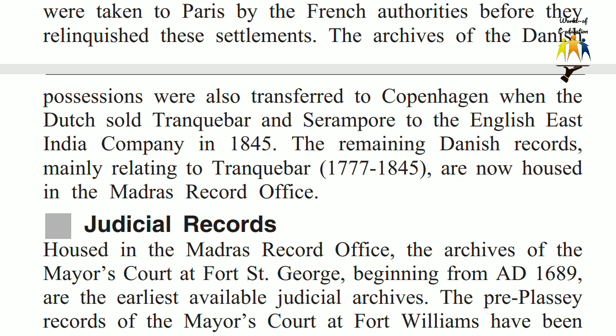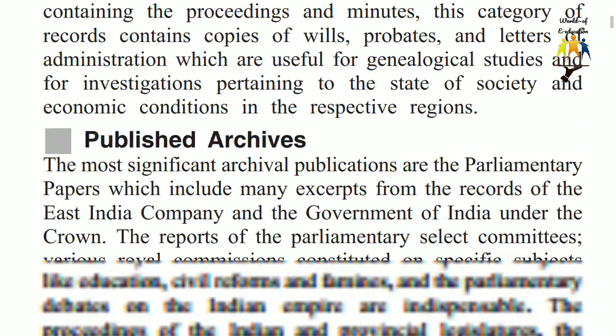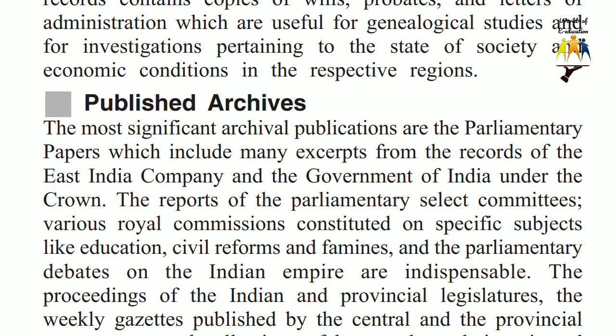The pre-Plassey records of the Mayor's Court at Fort Williams have been lost, but those for the years 1757–73 are kept in the Record Room of the Calcutta High Court, along with the archives of the Supreme Court of Bengal, 1774–1861. Similarly, the records of the Mayor's Court at Bombay established in 1728 are available in the Maharashtra Secretariat Record Office, which also has the custody of the archives of the Bombay Recorder's Court and the Supreme Court. Apart from containing the proceedings and minutes, this category of records contains copies of wills, probates and letters of administration, which are useful for genealogical studies and for investigations pertaining to the state of society and economic conditions in the respective regions.